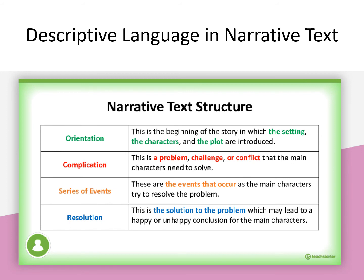Narrative text structure review: Orientation — the beginning of the story in which the setting, characters, and plot are introduced. Complication — a problem, challenge, or conflict that the main characters need to solve. Series of events — the events that occur as the main characters try to resolve the problem. Resolution — the solution to the problem, which may lead to a happy or unhappy conclusion for the main characters.